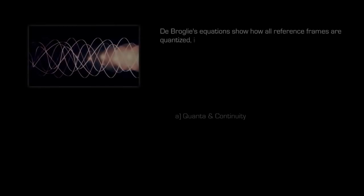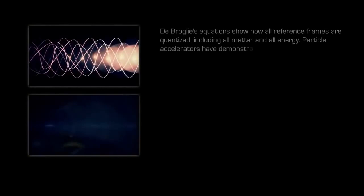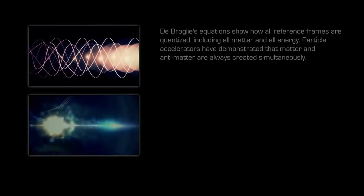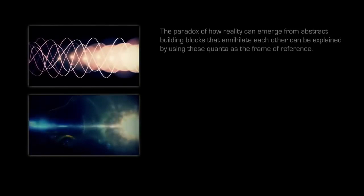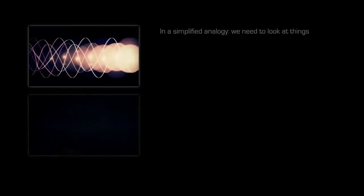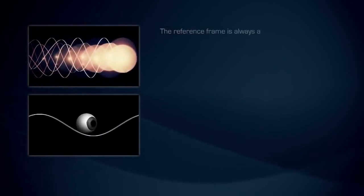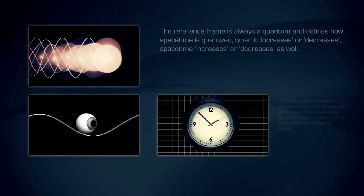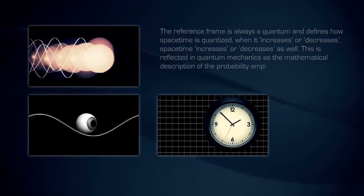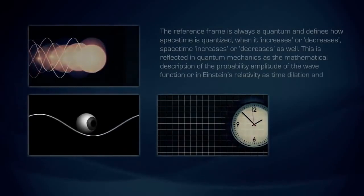De Broglie's equations show how all reference frames are quantized, including all matter and all energy. Particle accelerators have demonstrated that matter and antimatter are always created simultaneously. The paradox of how reality can emerge from abstract building blocks that annihilate each other can be explained by using these quanta as the frame of reference. In a simplified analogy, we need to look at things through the eyes of a photon. The reference frame is always a quantum and defines how spacetime is quantized. When it increases or decreases, spacetime increases or decreases as well. This is reflected in quantum mechanics as the mathematical description of the probability amplitude of the wave function, or in Einstein's relativity as time dilation and length contraction.